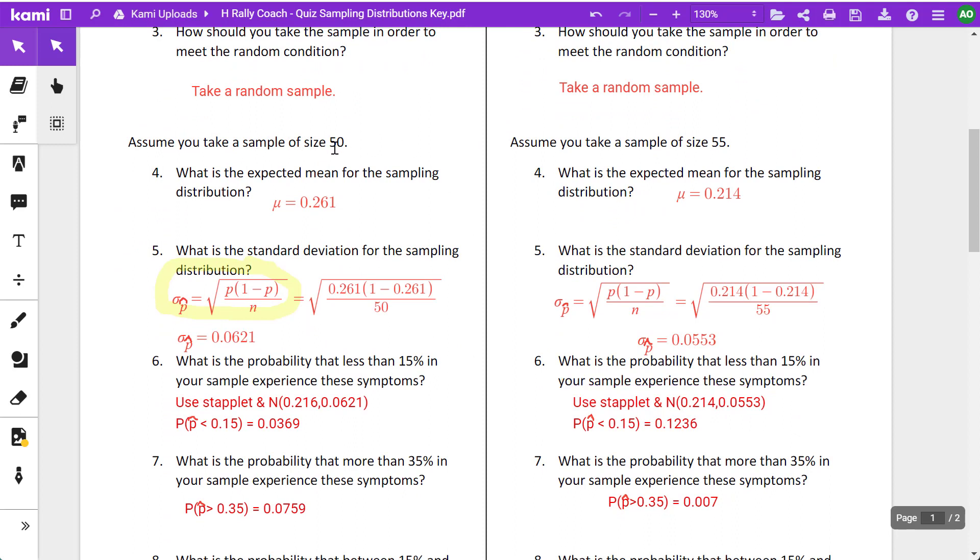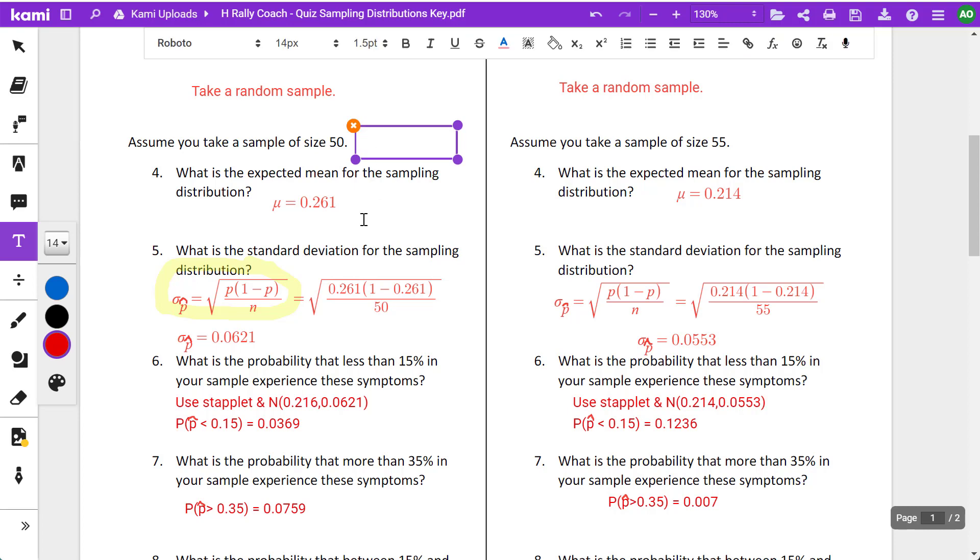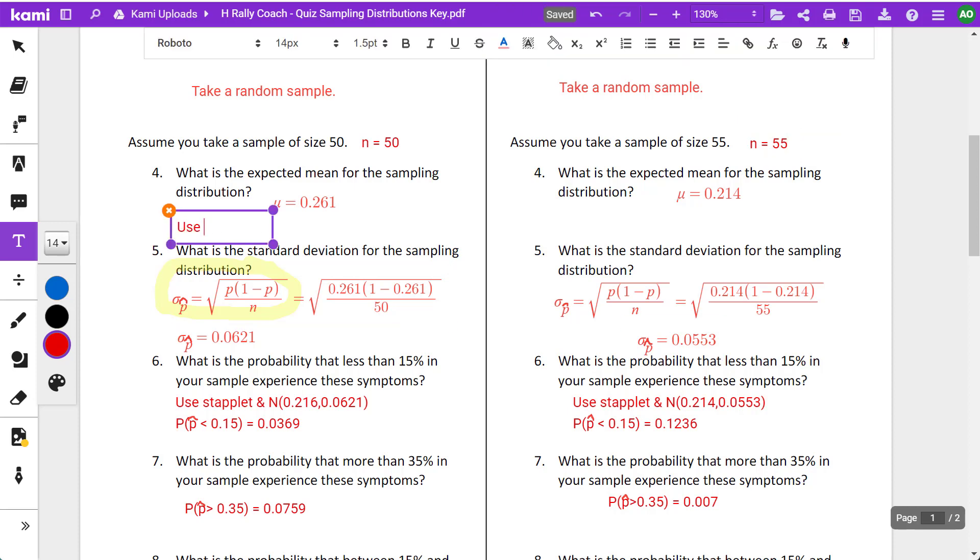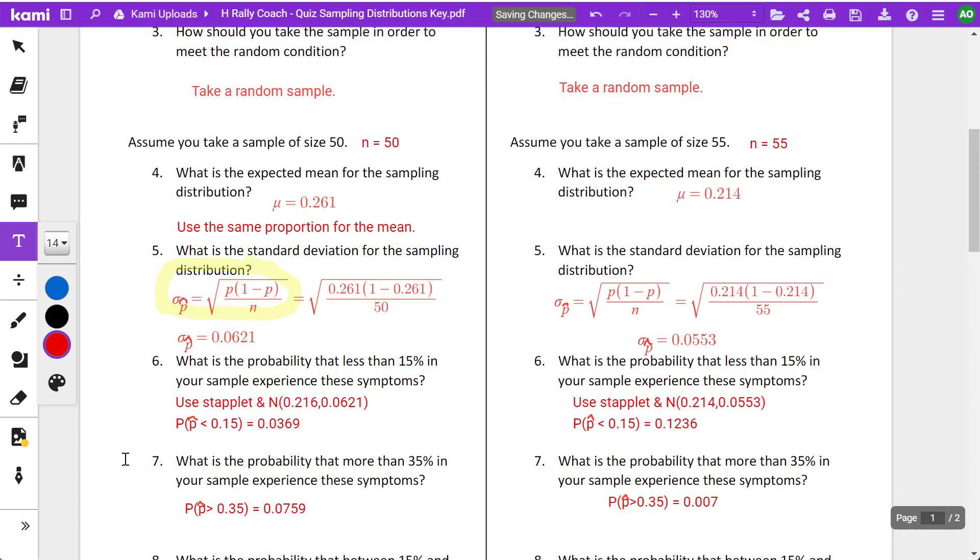Assume you take a sample size of 50. So here, now we know that N equals 50, the little n, not the population. And here, N is 55. What is the expected mean for the sampling distribution? The mean stays the same. So use the same proportion. It doesn't change. Don't use a decimal, use a proportion.